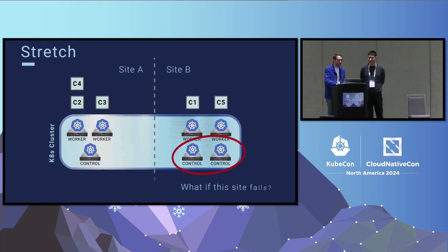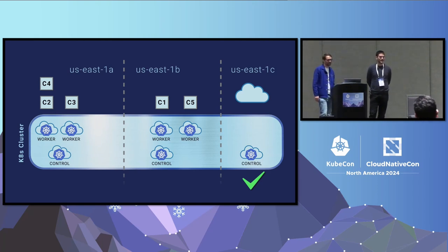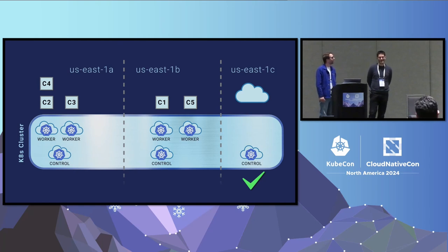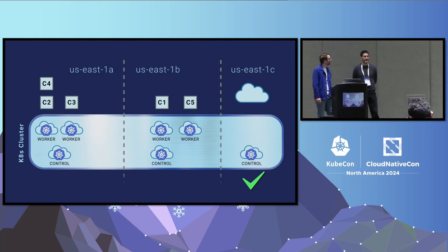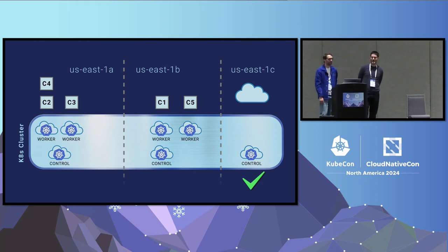What about clouds? All clouds come with multiple regions; however, round-trip time between regions is usually more than 100 milliseconds — not ideal for multi-site. But every region usually comes with multiple availability zones, and an availability zone is a separate building with separate power, cooling, and networking. So stretching your cluster among multiple availability zones in a single region gives you a highly available cluster.